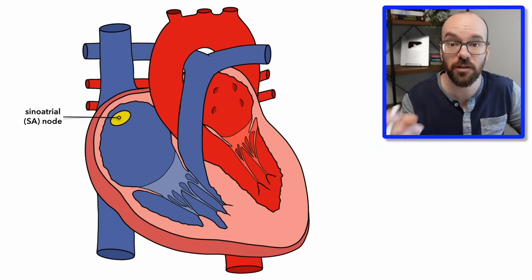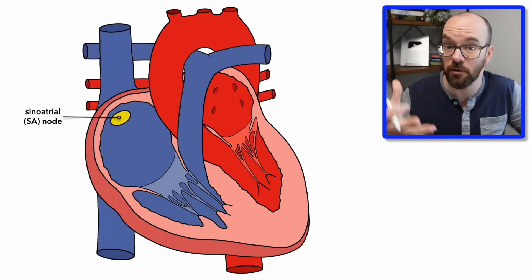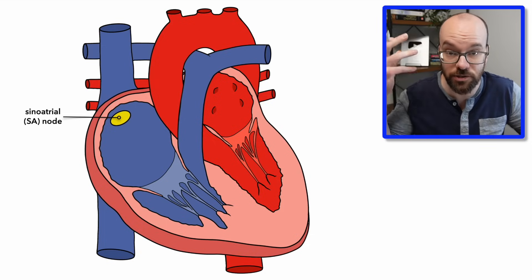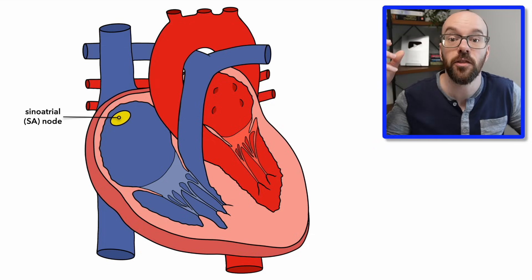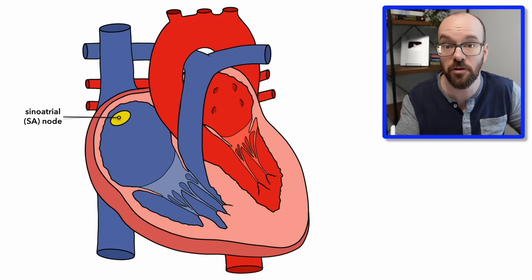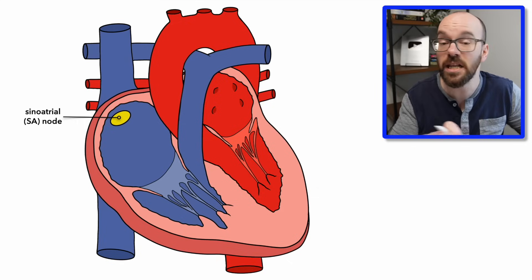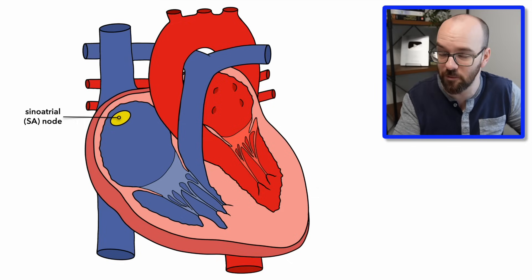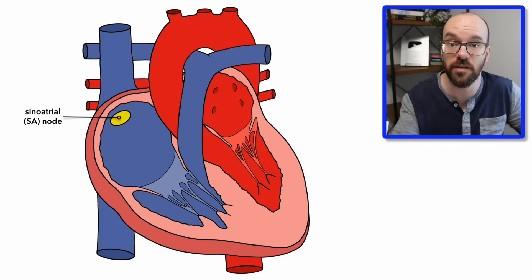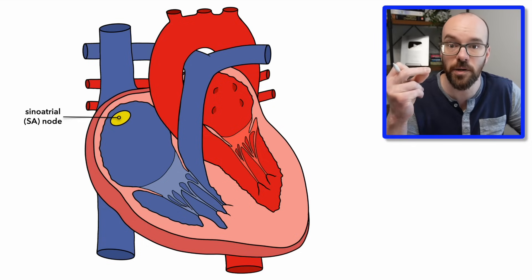The SA node sends a signal every time our heart beats. There will be input from the cardiac regions of the brain — sending signals to speed up or slow down the SA node — but even without that input, the SA node fires signals on its own, causing our heartbeat rhythm.